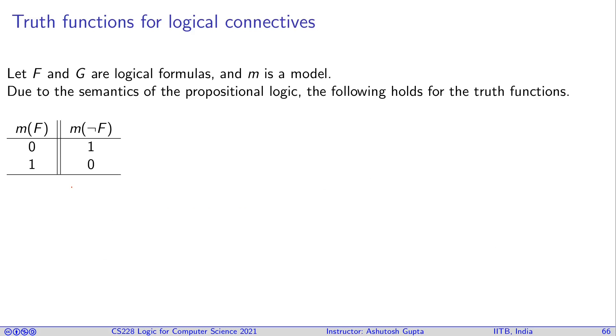Using truth functions, you can basically write them as a table. For example, here you can see that if M of F is zero or one, then the value of not F is one or zero, respectively.